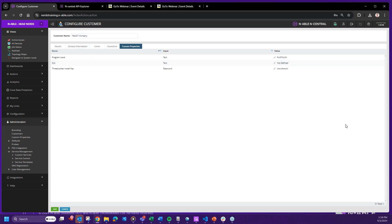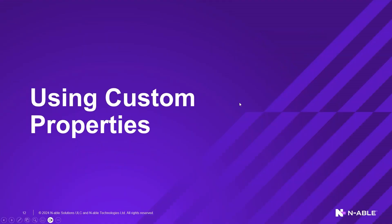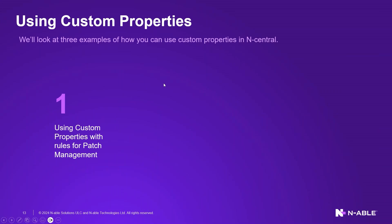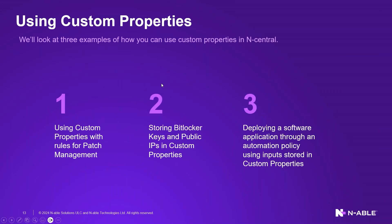We're going to talk about using custom properties in three different ways. This is a condensed version of our custom properties bootcamp — the full version is an hour long. We're going to talk about: one, using custom properties with rules for patch management; two, storing BitLocker keys or public IPs in N-central; and three, deploying software through an automation policy using inputs stored in the custom property.